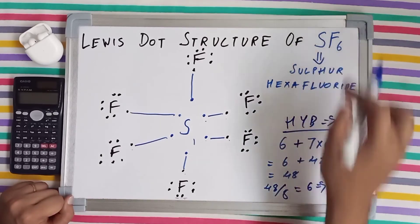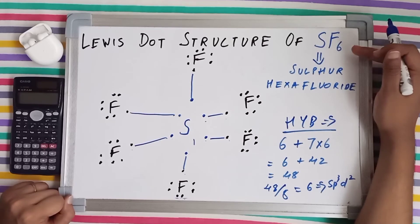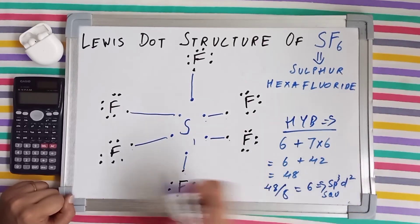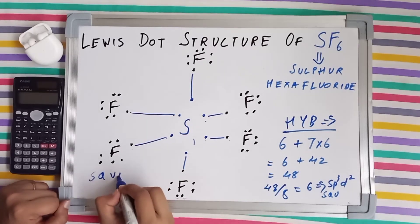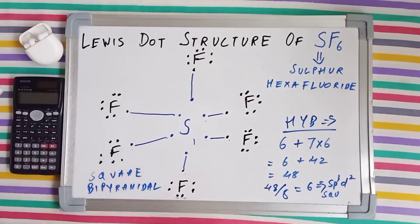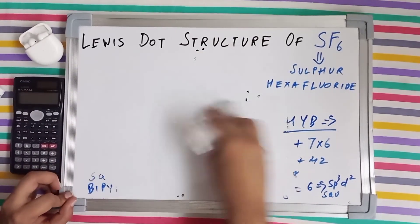This hybridization also tells us that the geometry of SF₆ will be square bipyramidal.